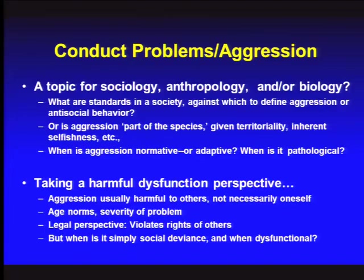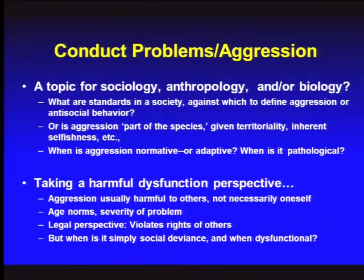We're going to move into lecture 10: aggression — a topic relevant not just for developmental psychopathology, but biology, culture, and sociology. Sometimes you need to fight back, and primate species including humans can be pretty aggressive at times. As with inattentive and impulsive behavior, and as we'll talk about with depressed behavior, the question is: when is aggression normative and when is it pathological? Is it statistical, moral, or a harmful dysfunction?